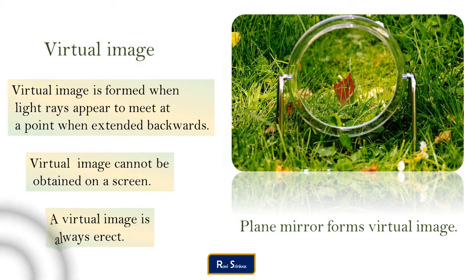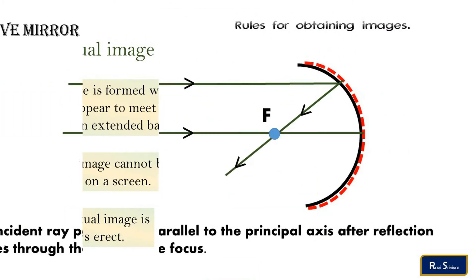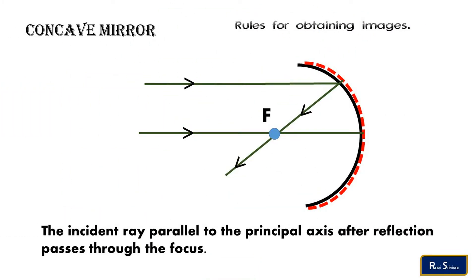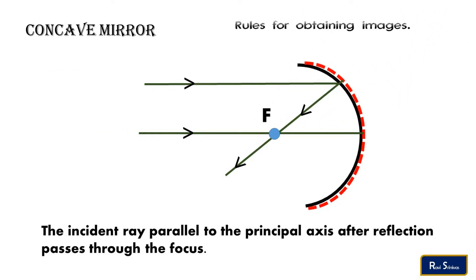For example, in a plain mirror, the image may be formed at a certain distance behind the mirror, but light rays do not really pass through the mirror. We can trace the light rays to locate the image geometrically. Knowledge of the following light rays helps us in finding the image of point objects.